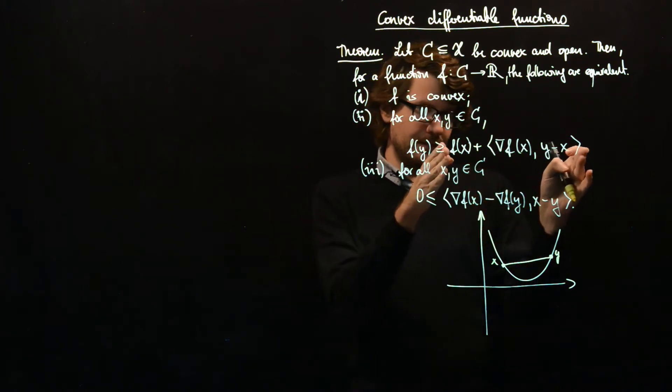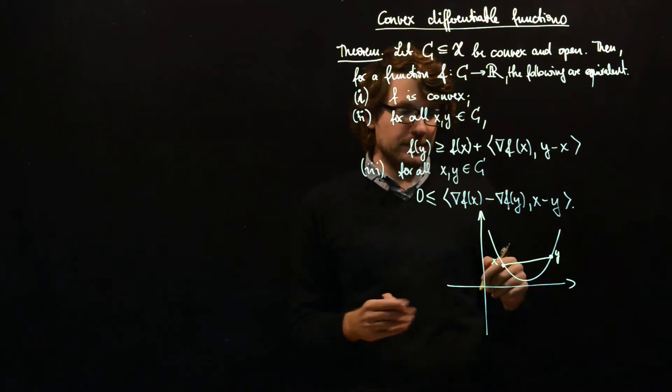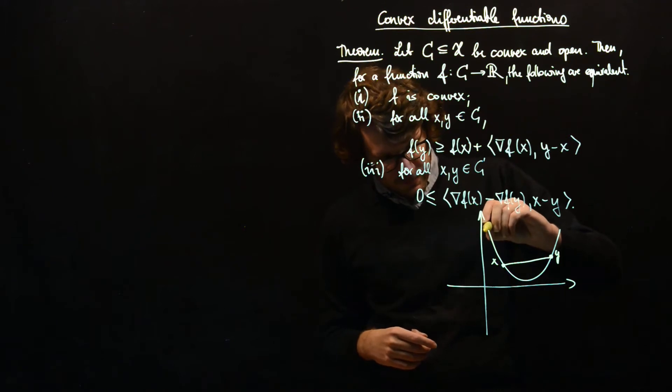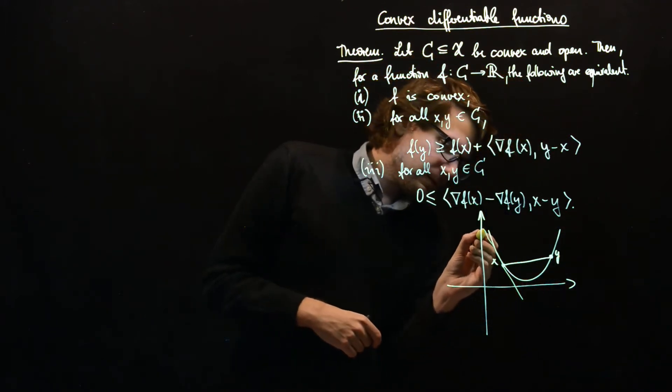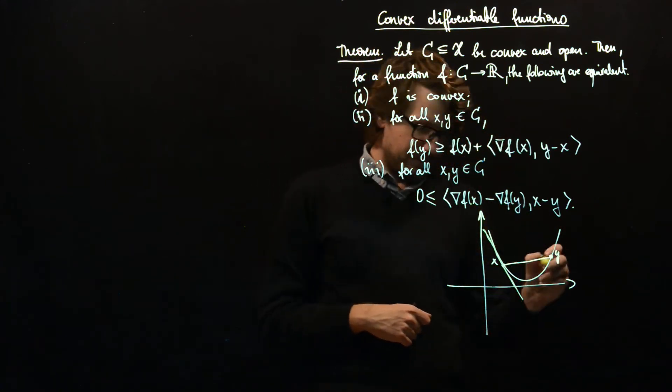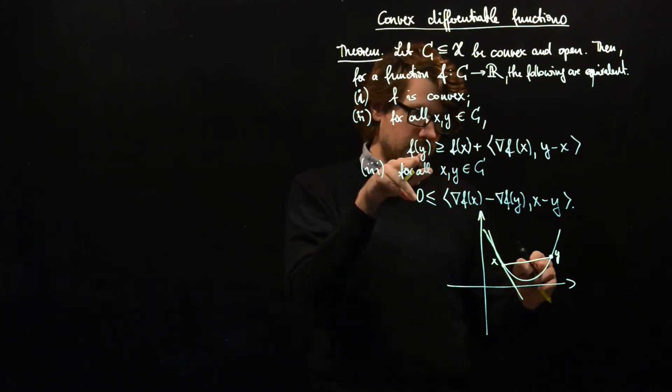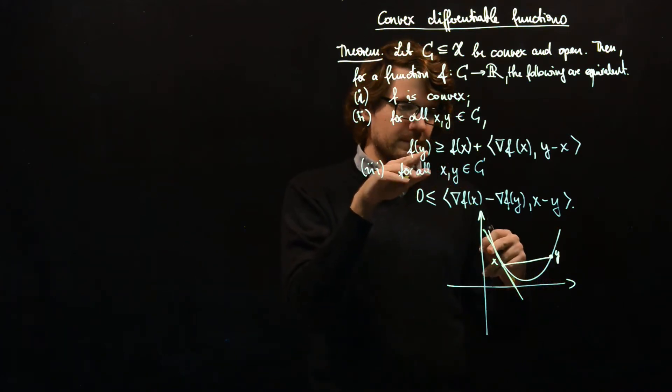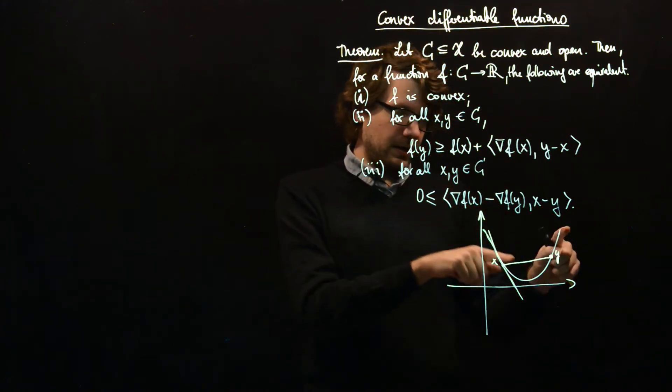...take this thing here which is the first order Taylor approximation in the point X. So this should be tangential to the graph and this is always below the graph at other points. So this is always below F of Y.